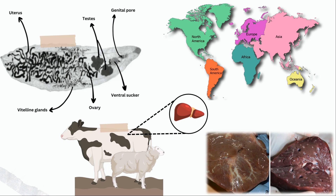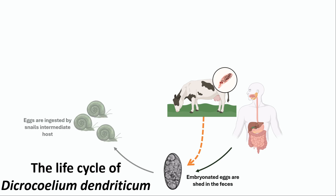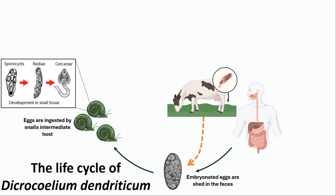But how is the life cycle of this parasite? Embryonated eggs containing miracidia are shed in the feces of definitive hosts, which are typically ruminants. The eggs are then ingested by the first intermediate host, which is a snail. When the miracidia hatch, they migrate through the gut wall and settle into the adjacent vascular connective tissue, where they become mother sporocysts.